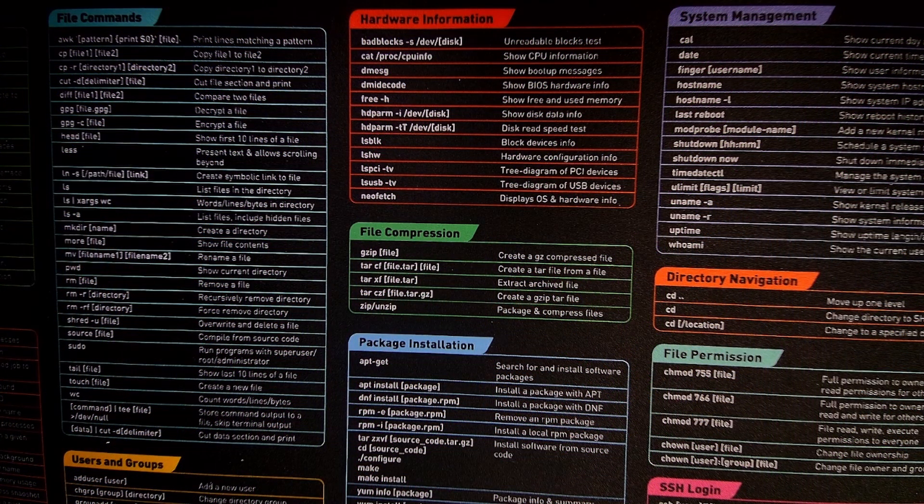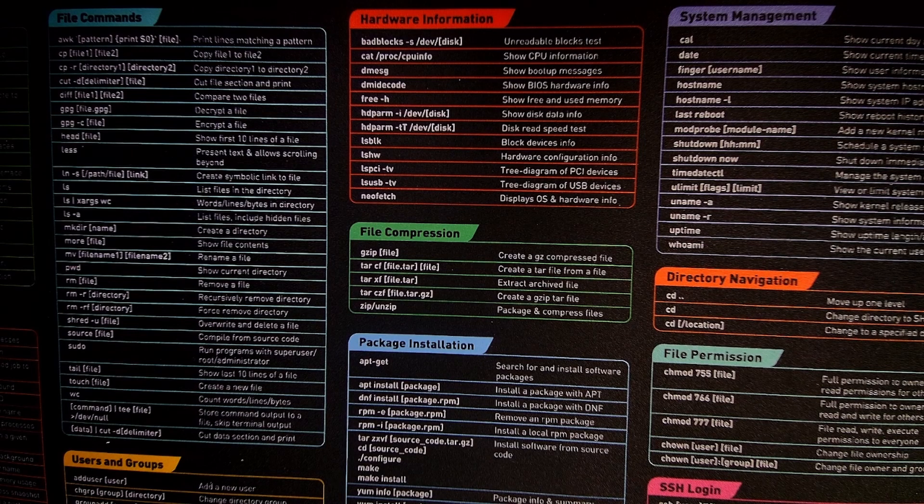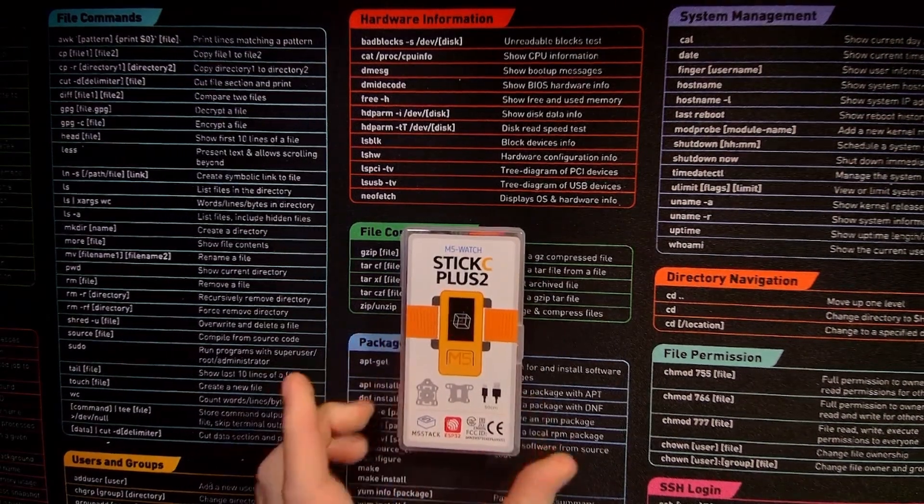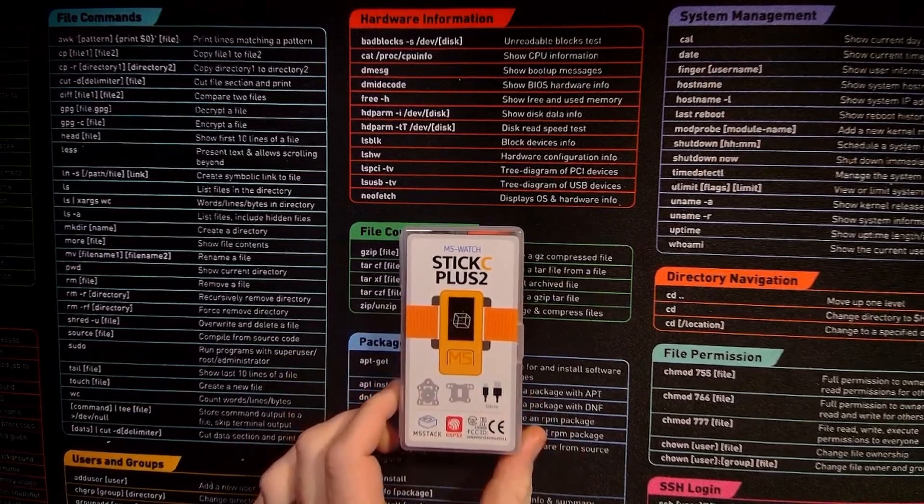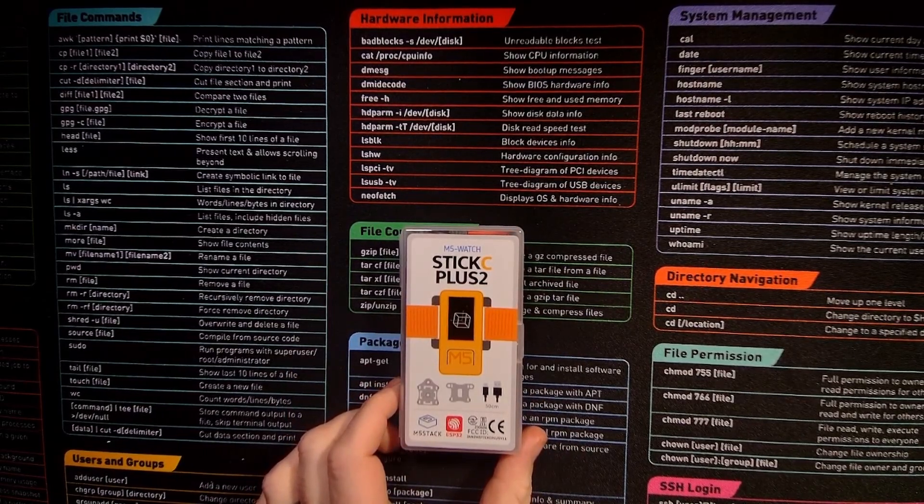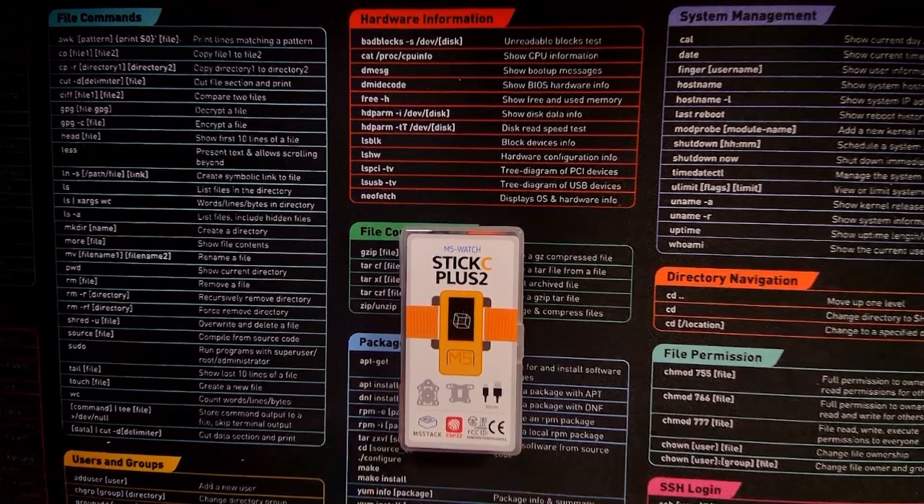Hello and today we are doing a quick unboxing of the M5 Stack Stick C Plus 2. This is a device made by M5Stack that's based on the ESP32 chip, and I'm just going to go through what's actually included inside the box.